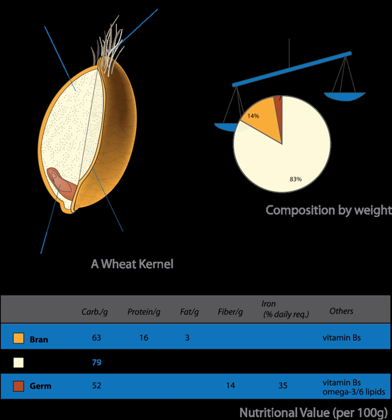Bran is present in cereal grain, including rice, corn, wheat, oats, barley, rye, and millet. Bran is not the same as chaff, which is a coarser scaly material surrounding the grain but not forming part of the grain itself.